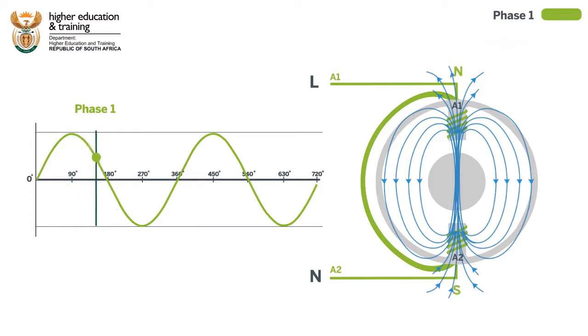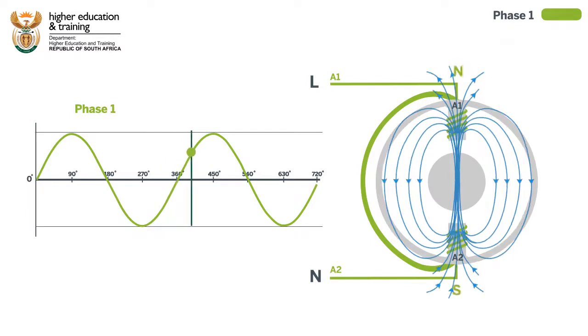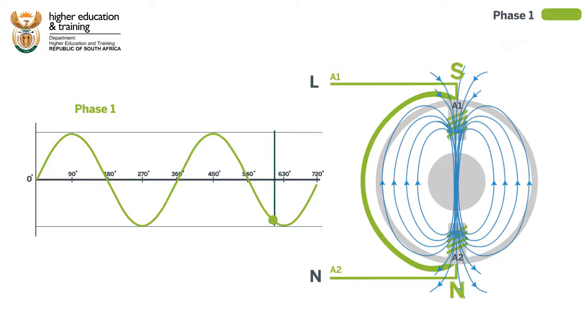As the current alternates, all that happens is that the polarity of the stator field flips. There is no rotation for the rotor to follow.